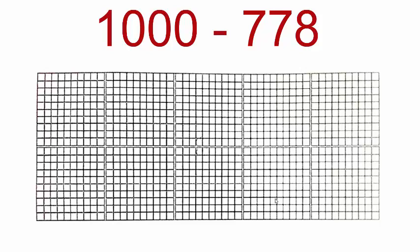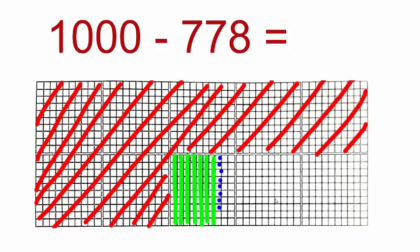To take away 778 from 1000, you will remove 778 squares from your grid using any one color. So right here I have removed 100, 200, 300, 400 and so on. Your picture will look like this.